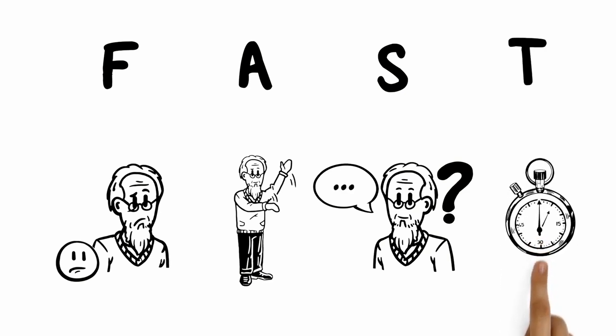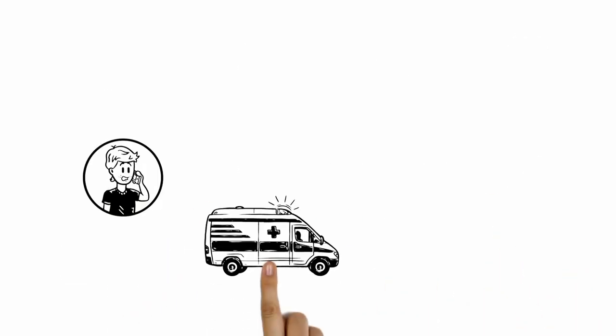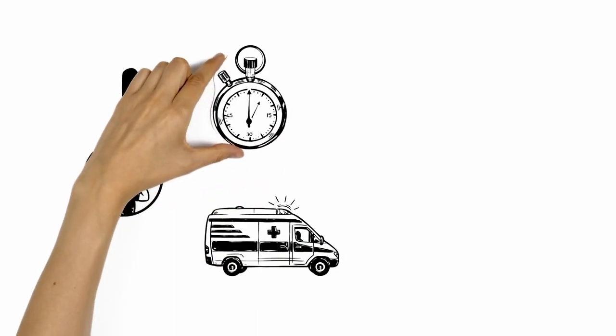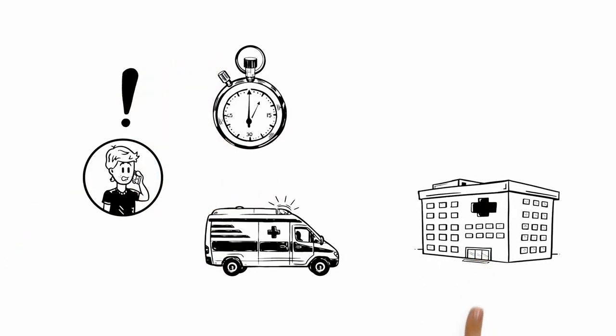And the T stands for time. If you notice any of these signs, it's time to call an ambulance immediately, even if the symptoms go away. The quicker a person gets to a specialist stroke unit, the quicker they will receive treatment, meaning more brain cells can be saved.